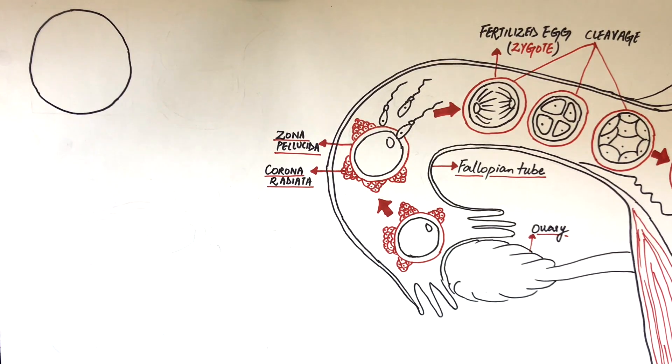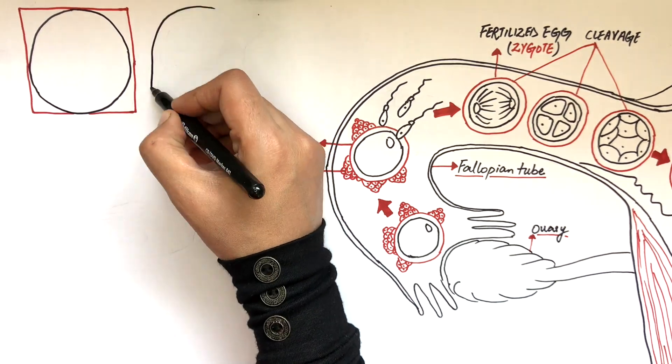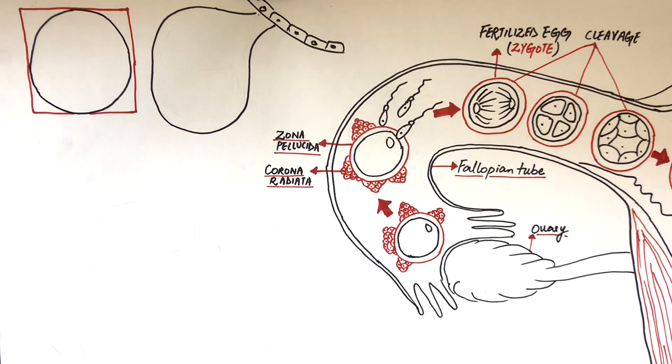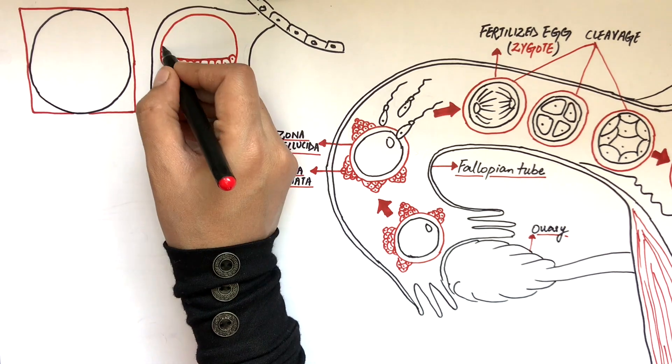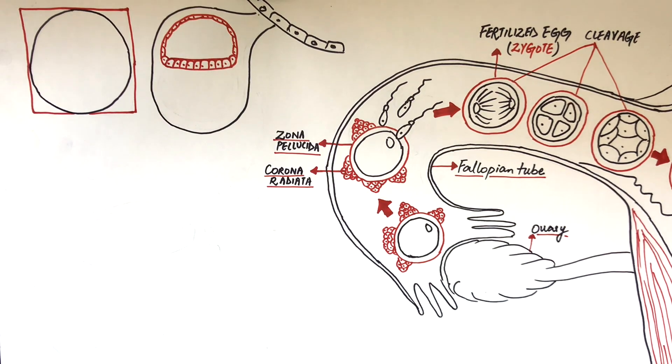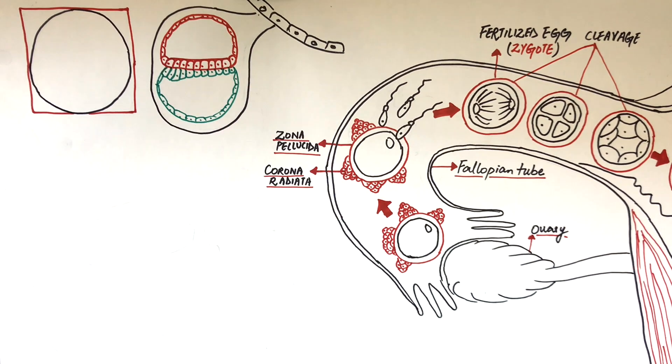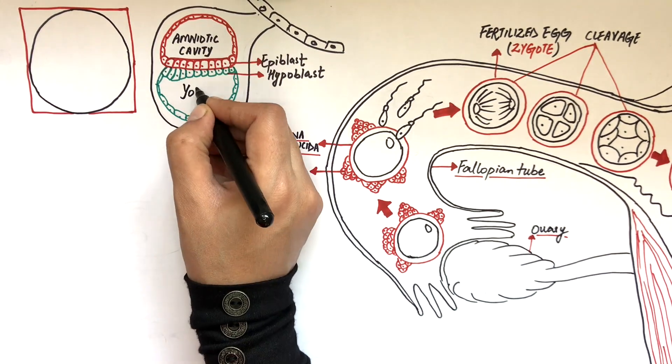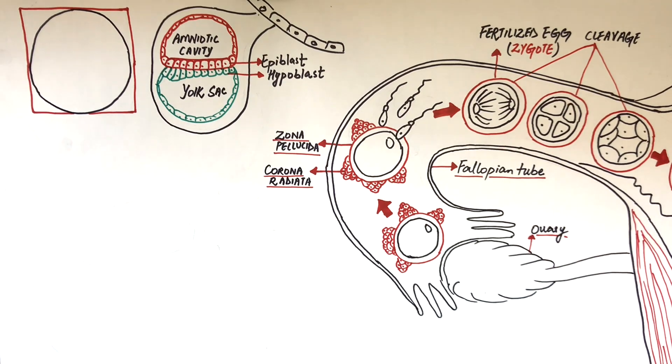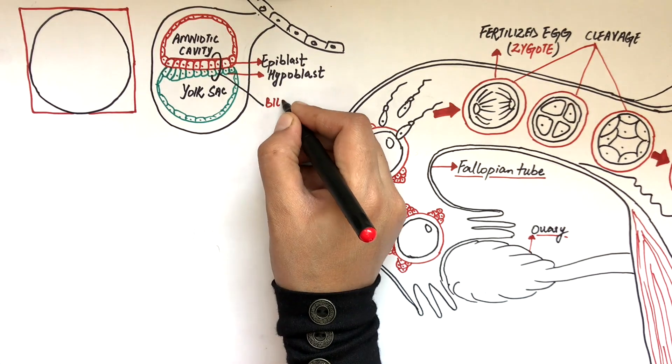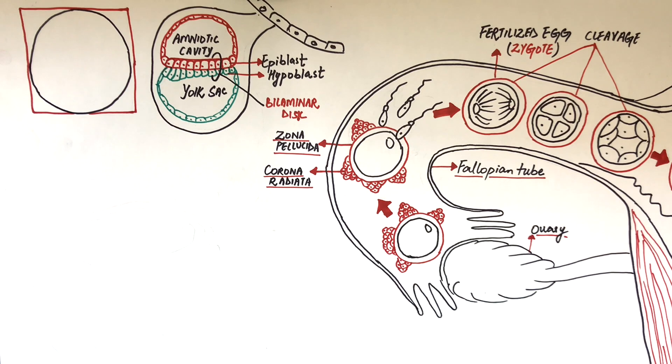If a cross section of this embryo is taken at the second week of implantation, the embryoblast has developed into two layers of cells: the upper epiblastic layer shown in red and the lower hypoblastic layer shown in green. The epiblastic layer will outline the amniotic cavity and the hypoblastic layer will surround the yolk sac. Together they make up the bilaminar disc.